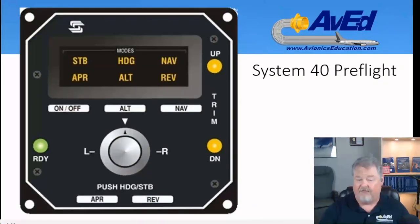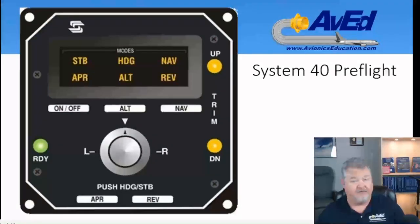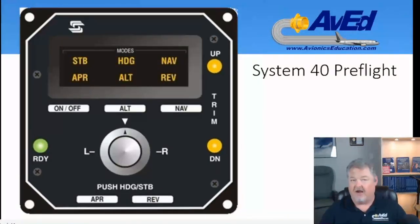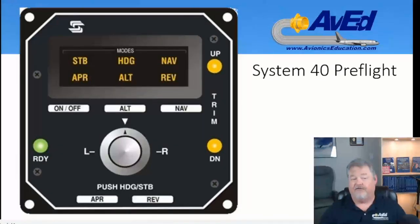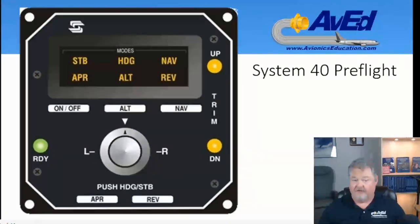Let's take a look at the System 40 pre-flight test. If you have a yaw damper switch in the aircraft, hit the yaw damper switch to off. Select battery switch on, and then set the avionics master switch to on. That kind of pre-charges or pre-sets the computer. Then move the switch down to the test position. What will happen is the stabilization, heading, nav, approach, and — if it has altitude — altitude and reverse enunciators will all appear. Then the ready lamp will illuminate on the display.